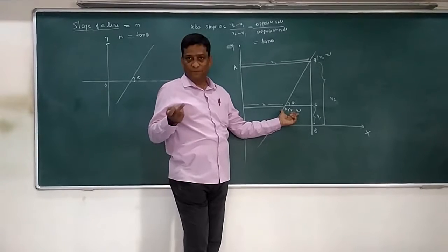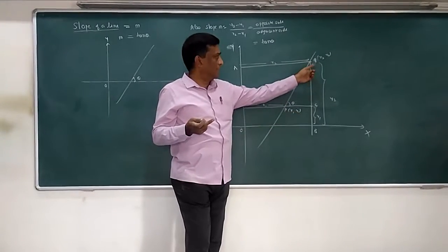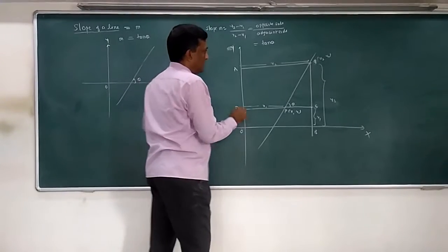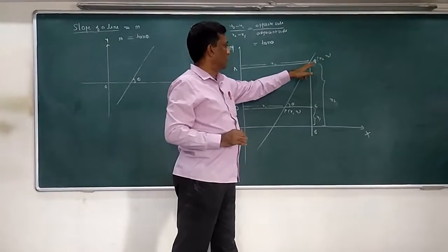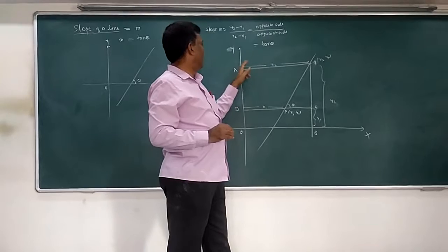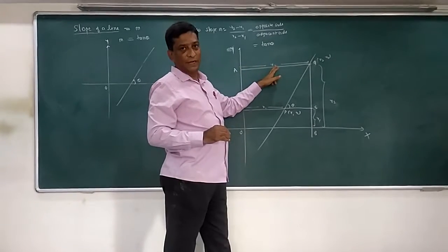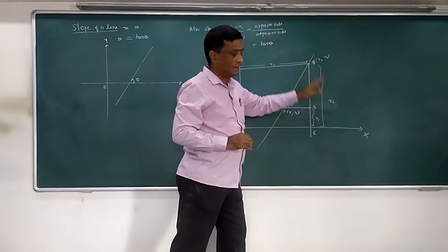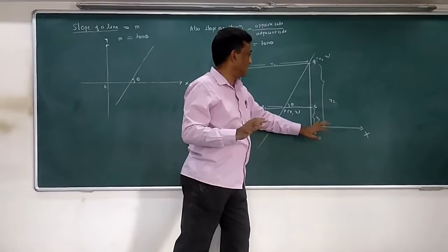P is given as x1, y1 and Q is given as x2, y2. What it means is, if I say Q is x2, y2, distance of Q from y-axis is nothing but x coordinate, that is x2. Distance of Q from x-axis is nothing but y2, that is the y coordinate.